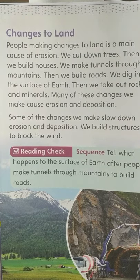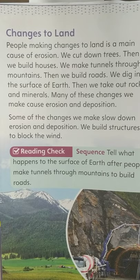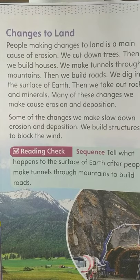Today's lesson we're going to be doing lesson three in your science book and we're going to be talking about changes that we can make to the land. Instead of the natural changes — the quick changes from nature or the slow changes — we are now going to talk about all of the changes that people make to the land and the water around us, and we're going to see what kind of effects they have and why we make these changes.